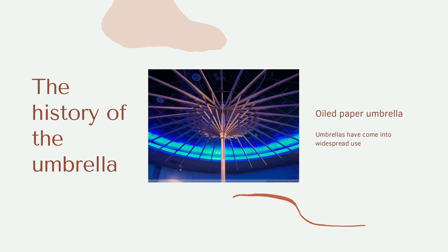During the Tang dynasty, the paper industry was well developed and paper was widely used in society. Some craftsmen applied tung oil to the paper to make boiled paper umbrellas that could protect against the rain, and for a while everyone was holding up paper umbrellas in the rain. Umbrellas were no longer reserved for the aristocracy.